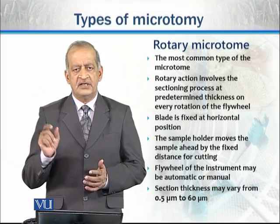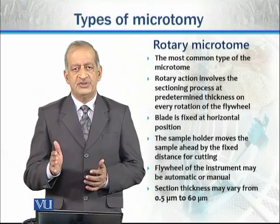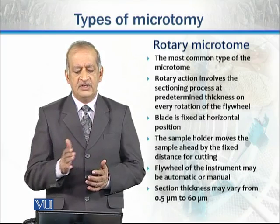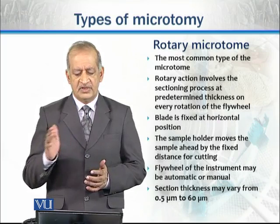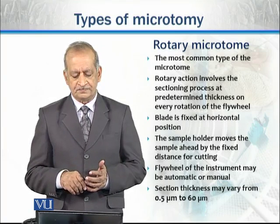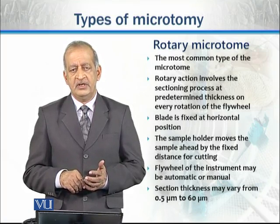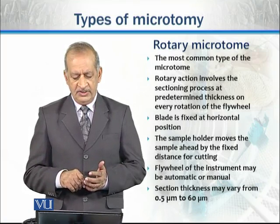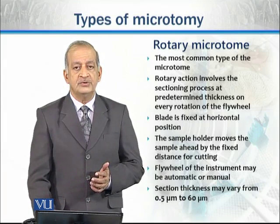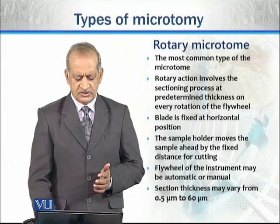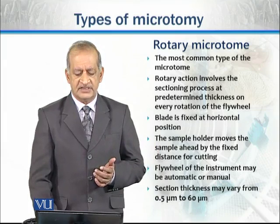For example, if we fix the section thickness at 10 micrometers, the sample holder will advance the sample by 10 micrometers after every rotation. The flywheel may be automatic or manually operated, and the section thickness can vary from 0.5 micrometers to 60 micrometers, depending on whether thin or thick sections are required.